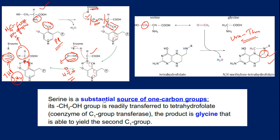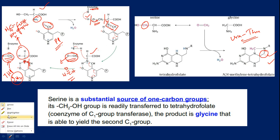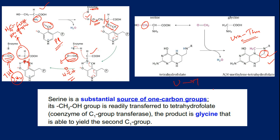Serine is a substantial source of one-carbon groups — its CH2OH group is readily transferred to tetrahydrofolate. So many biochemical syntheses and continuous cell production happen in our body. When a cell is regenerated, every part must be regenerated, including its nuclear material, which includes thymidine. The uracil-to-thymidine shift requires thymidylate synthase, which needs monocarbon units. This is the reason why there is substantial daily demand for serine.